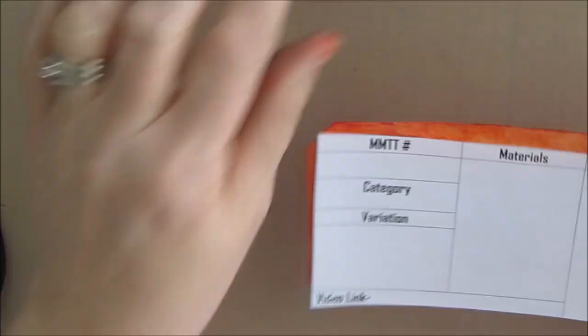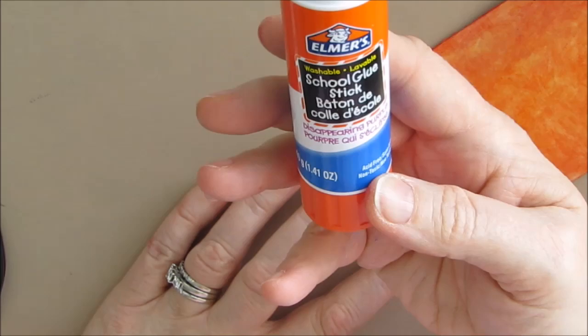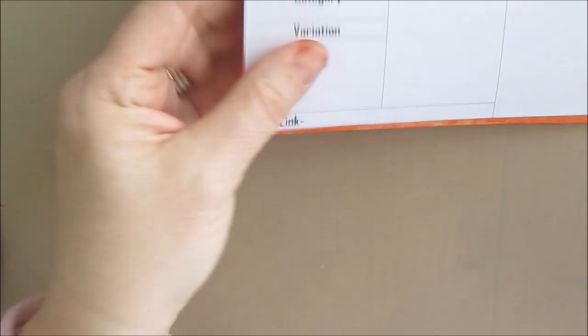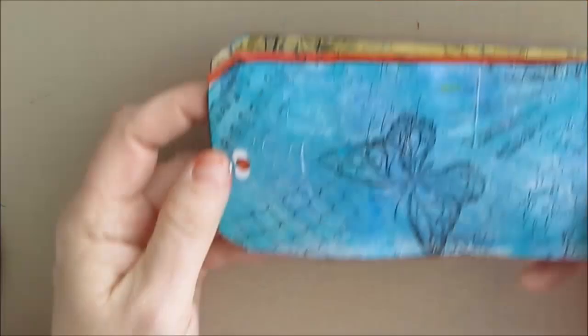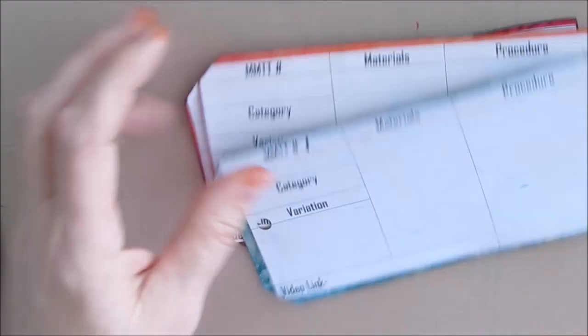So just gluing this on with a glue stick. You can use whatever you want. And I'm just making sure that it says mixed media technique tag number at the end where it will be hole punched. Just to make sure that it's always going the same way and they're not upside down.